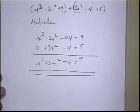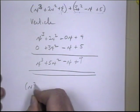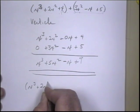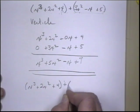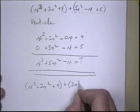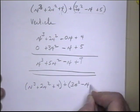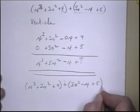Now let's add them horizontally. Horizontally, we have an x cubed plus 2x squared plus 4 plus 3x squared minus x plus 5 parentheses.